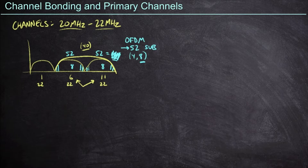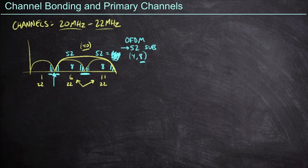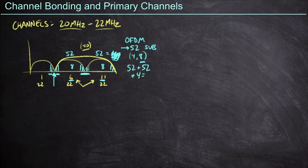Some of those guard bands are used at the start and end of our channels to make sure that channels 1 and 6 don't interfere with each other, so we don't use those subcarriers on the lower and higher ends. But the guard bands between channels 6 and 11 - we might as well use those. We don't need to worry about channel-to-channel interference between 6 and 11 since it's all one big channel. We can recover some of these, and so we end up with the two sets of 52 data subcarriers plus four of those guard bands, giving us 108 data subcarriers on our bonded channel.